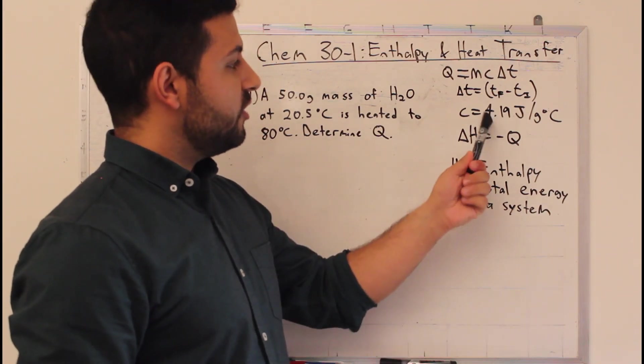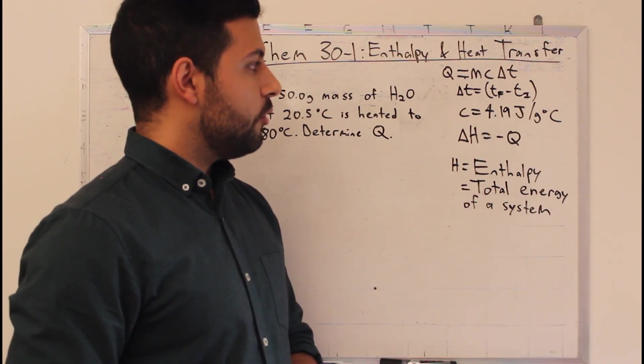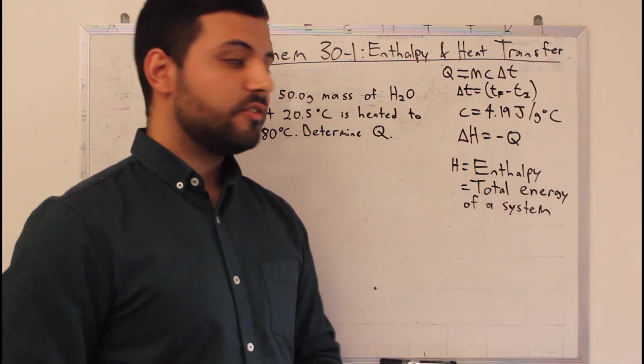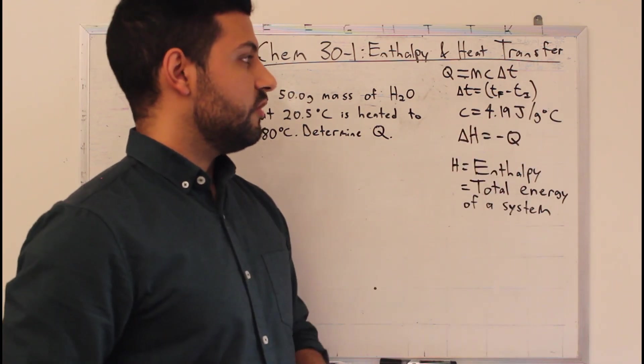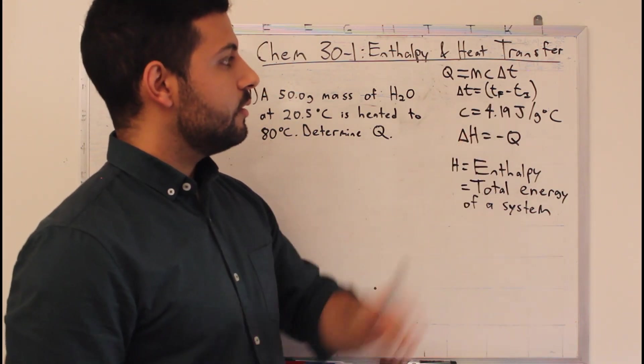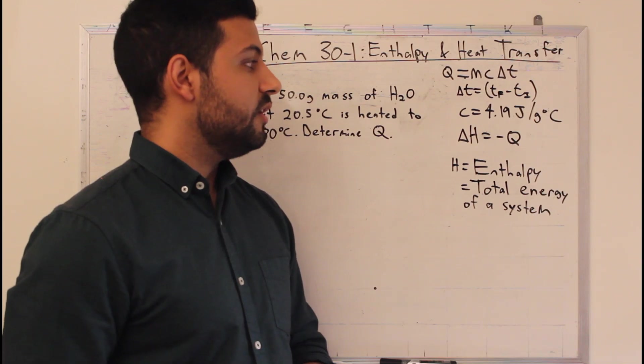We usually use water, and the specific heat capacity for water is 4.19 joules to heat up one gram of water one degree Celsius. Delta T is just another fancy way of saying change in temperature: the final temperature, Tf, minus the initial temperature, Ti.